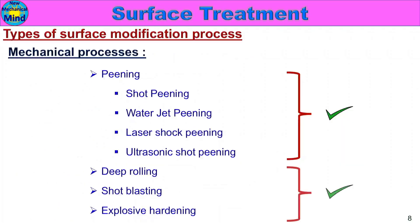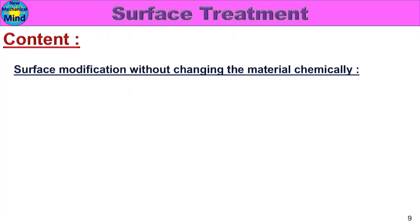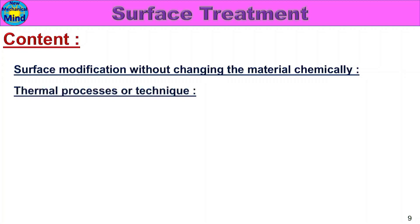In this video, we will see the details of deep rolling, shot blasting, and explosive hardening — the surface modification mechanical process. We will also look at surface modification without changing the material via chemical or thermal processes, and the details of the thermal process.